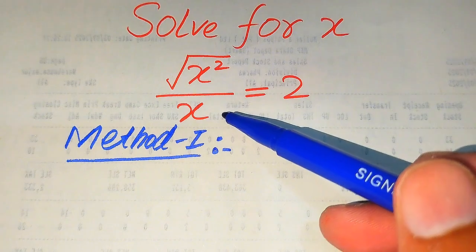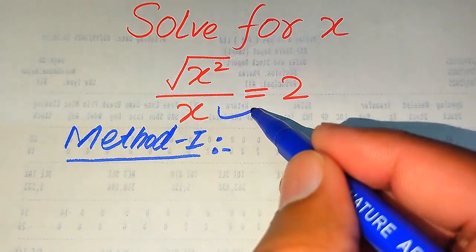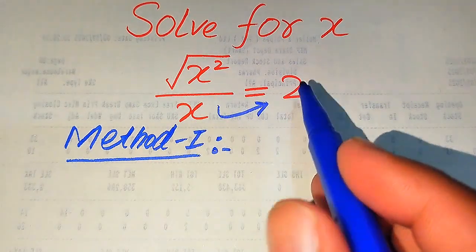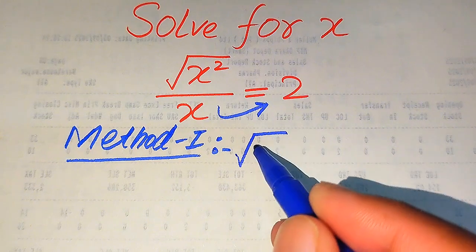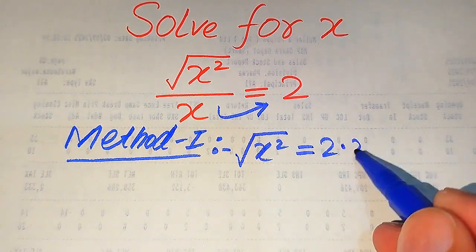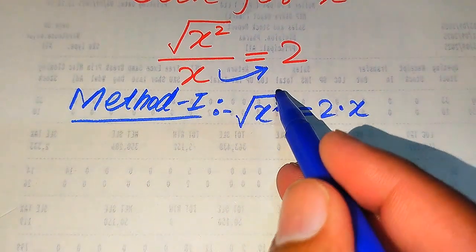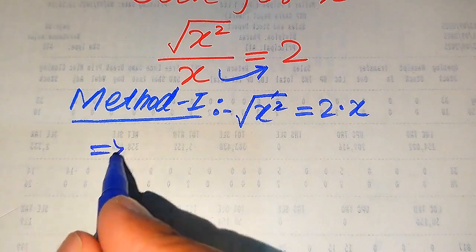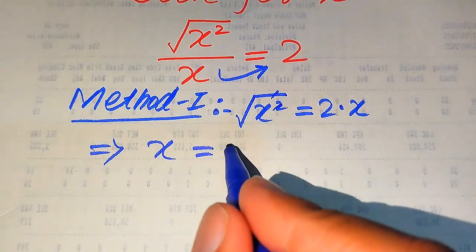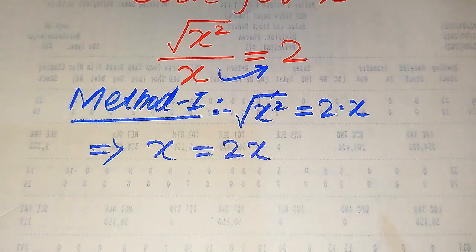When we move x to the right hand side, it is multiplied by 2. So the first step is moving x to the right hand side, giving us the square root of x squared equals 2x. In the next step, the square root and the square cancel, and we get x equals 2x.